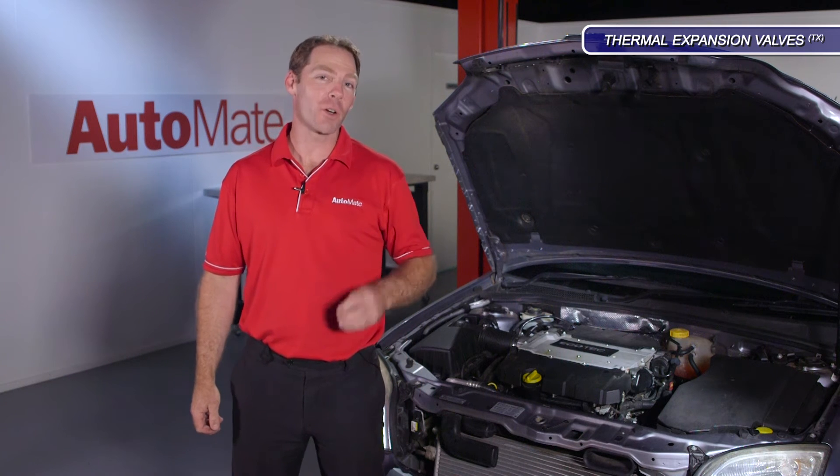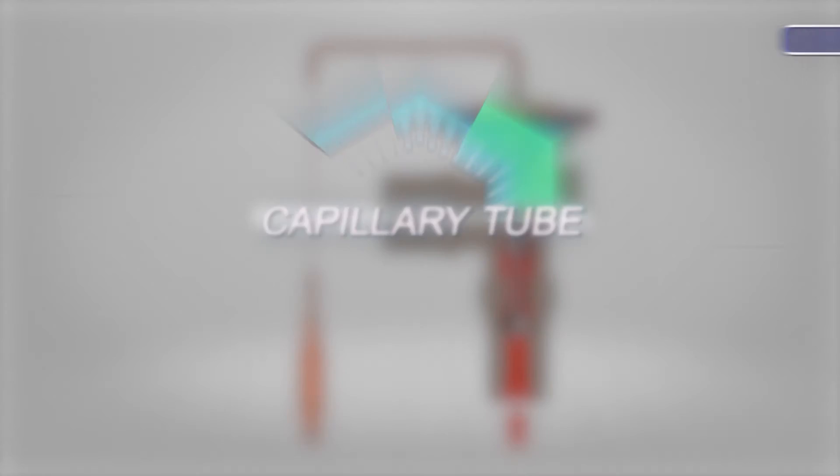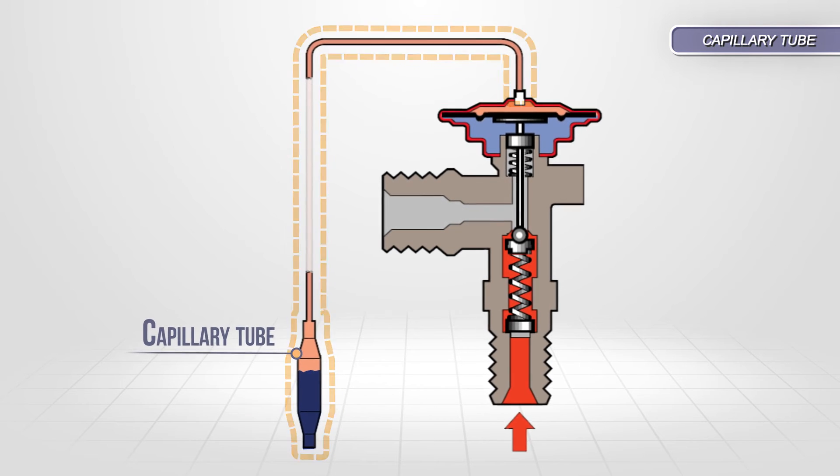The two most common types of TX valve today are the capillary tube and the block valve. This type of valve controls the flow of refrigerant using opposing pressures.